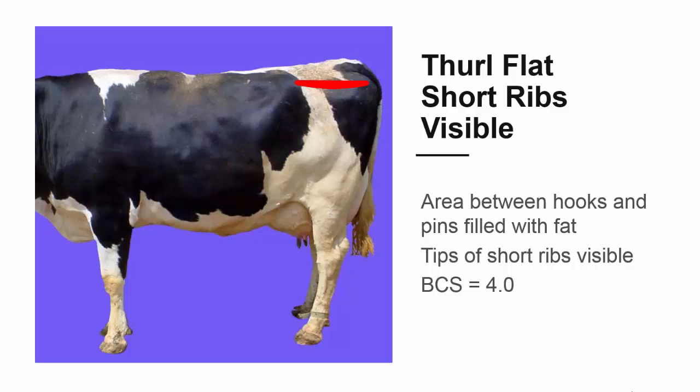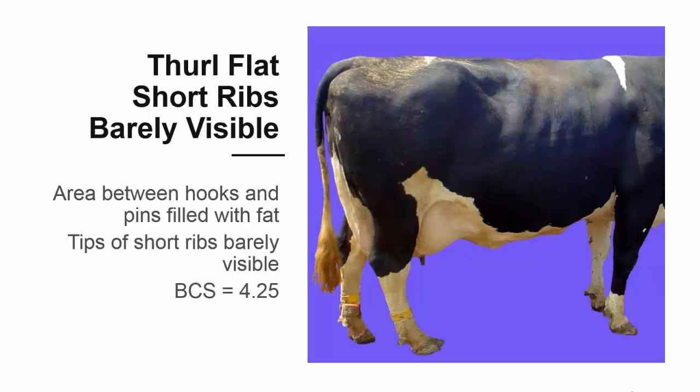The short ribs get covered next. If you can see the tips of individual bones in the short ribs, the cow gets a score of 4.0. If the tips of individual bones in the short ribs are just barely visible, the body condition score is 4.25.